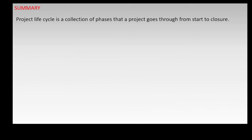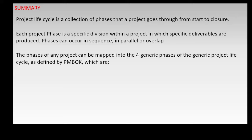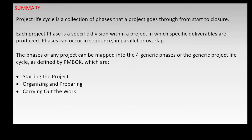In summary, project life cycle is a collection of phases that a project goes through from start to closure. Each project phase is a specific division within a project in which specific deliverables are produced. Phases can occur in sequence, in parallel, or overlap. The phases of any project can be mapped into the four generic phases of the generic project life cycle as defined by PMBOK, which are: starting the project, organizing and preparing, carrying out the work, and closing the project.